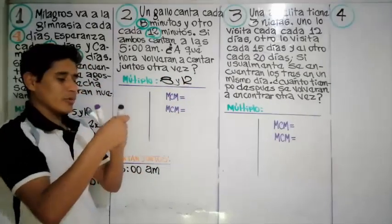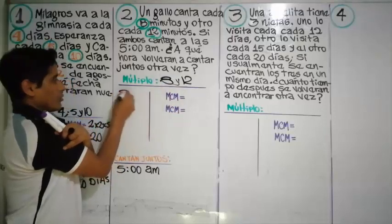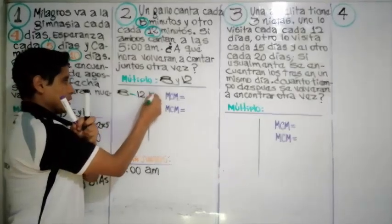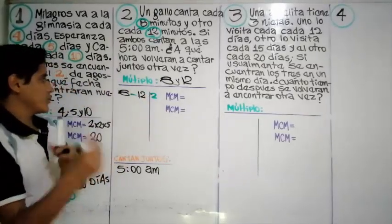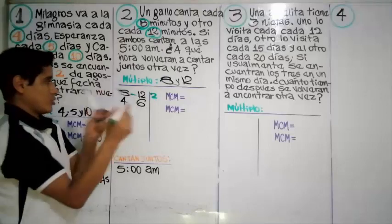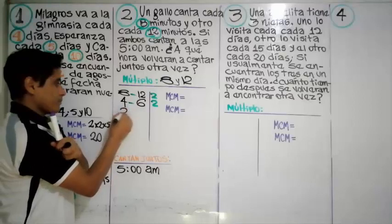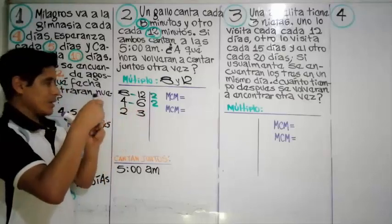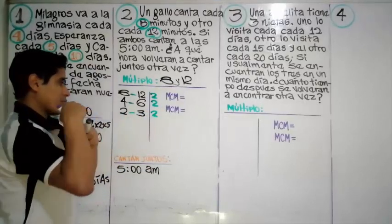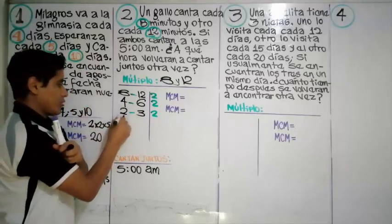Sacando el mínimo común múltiplo de ocho y doce: dividimos entre dos, ocho da cuatro y doce da seis; entre dos nuevamente, cuatro da dos y seis da tres; entre dos otra vez, dos da uno y tres no tiene.